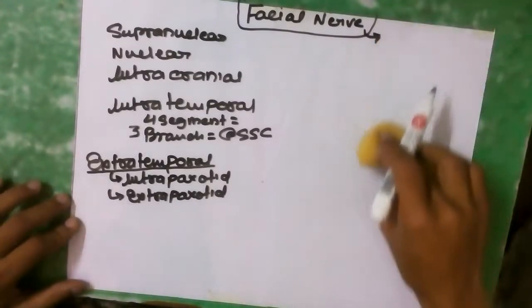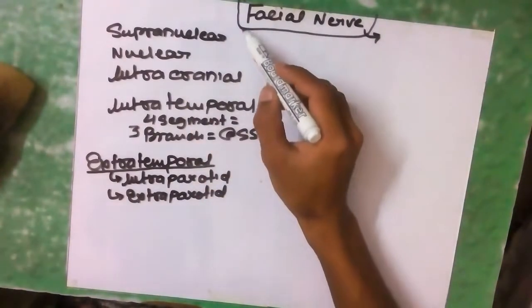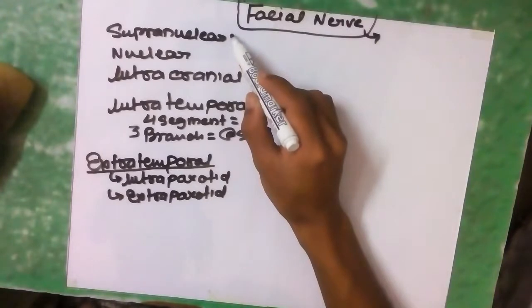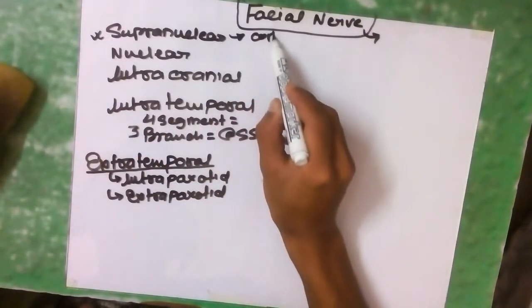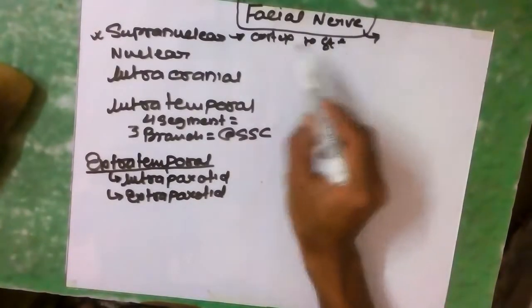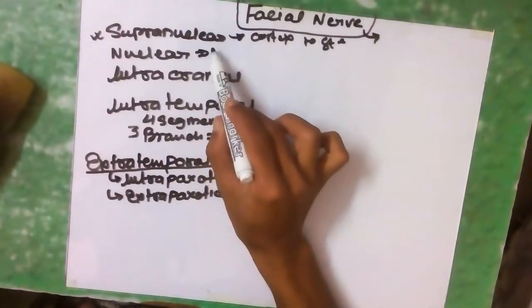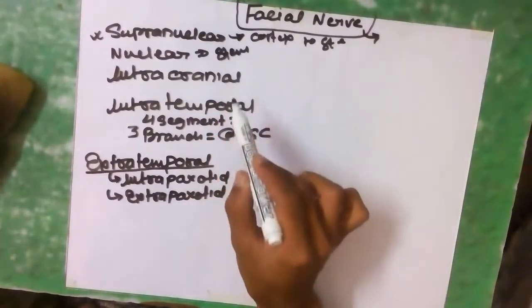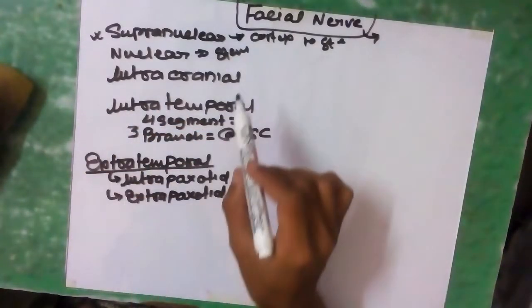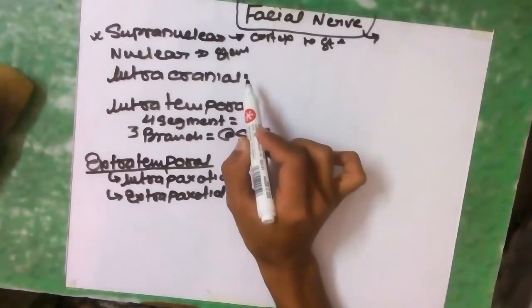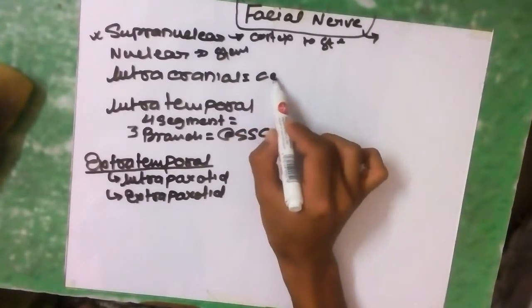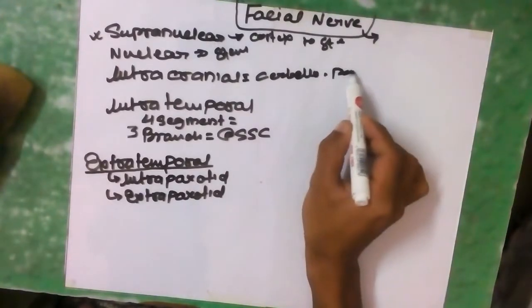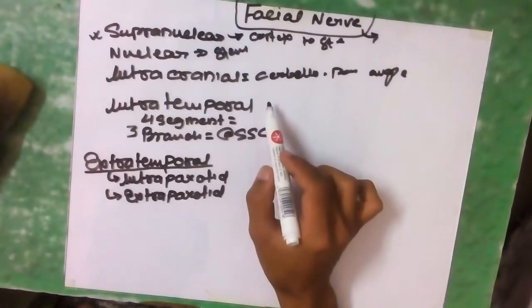The facial nerve originates from the cortex region and descends down to the brain stem — this is the supranuclear region, meaning fibers from cortex to brain stem. The region of the facial nerve within the brain stem is considered the nuclear region. Moving to the intracranial region of the facial nerve: this is situated at the cerebellopontine angle, and there is no division of the facial nerve in this region.